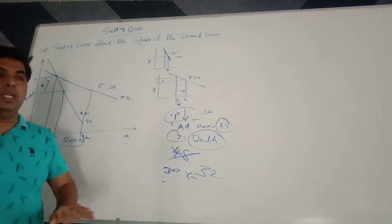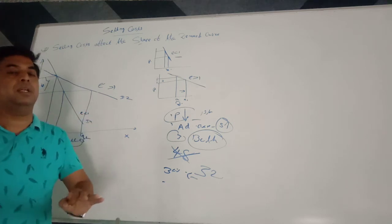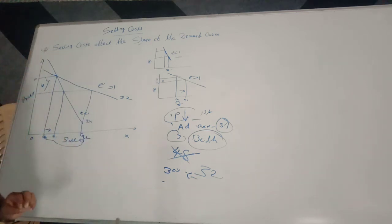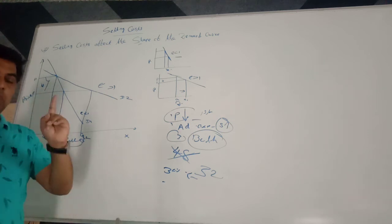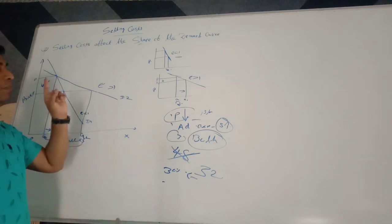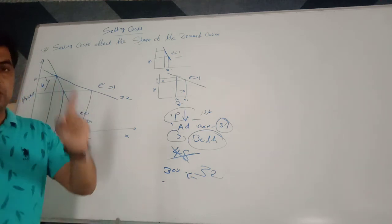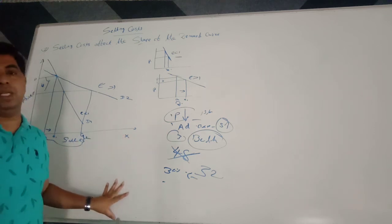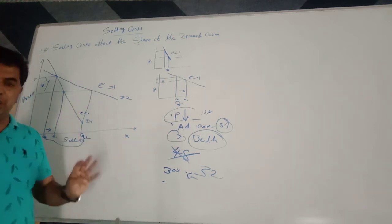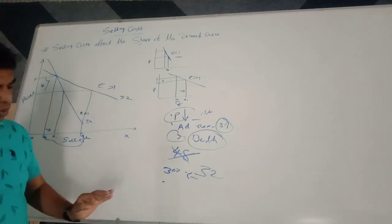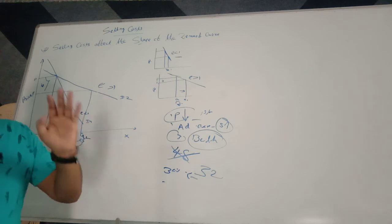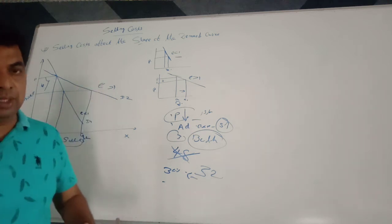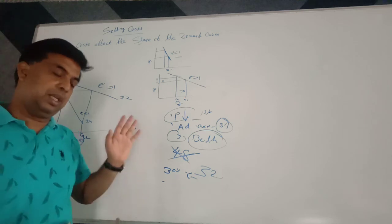This means selling cost is not only affecting the location or position of the demand curve — selling cost also changes the shape of the demand curve. When you adopt both alternatives together, along with price reduction when you incur selling cost, the shape of the demand curve will definitely be changed. So in this topic we covered: what are selling costs, the difference between selling cost and production cost, how selling cost affects the location of the demand curve, and how selling costs can affect the shape of the demand curve. Thank you very much.